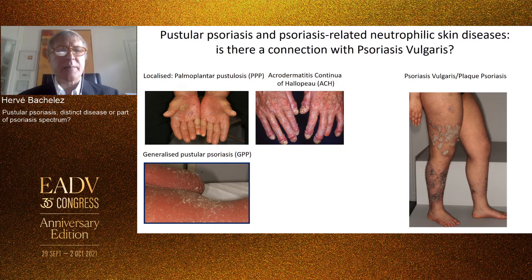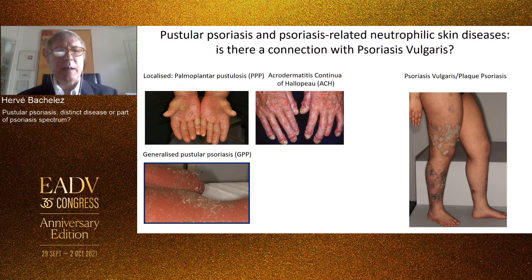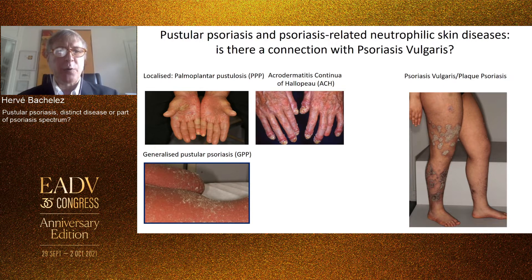Pustular psoriasis encompasses a list of clinical entities that share in common the presence of pustules. The less rare is the palmoplantar pustulosis variant, while other very rare variants include acrodermatitis continua of Hallopeau, an acropustular variant, and the disseminated or generalized pustular variant, which is generalized pustular psoriasis, or GPP.